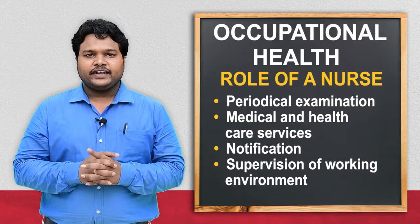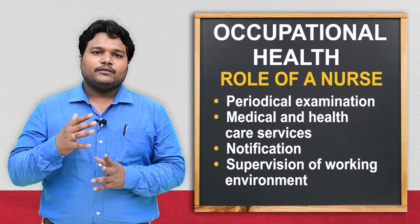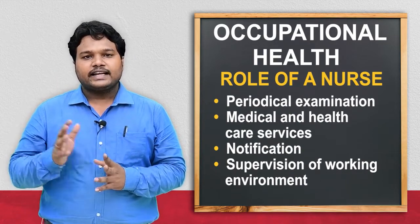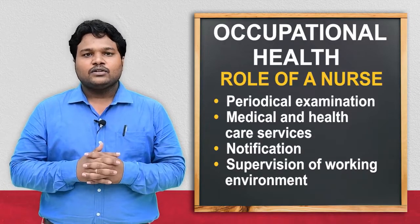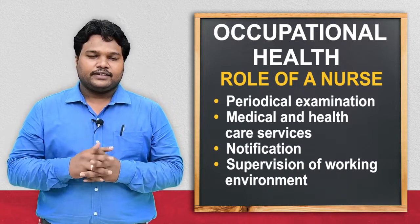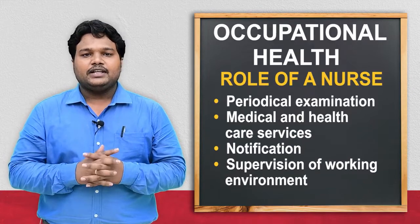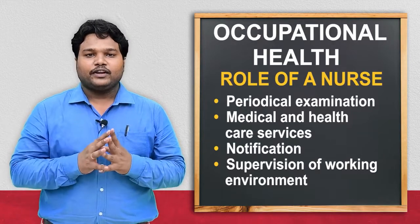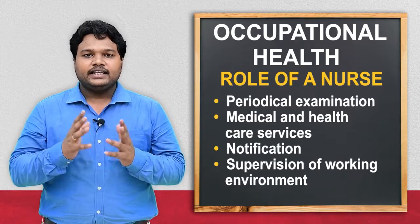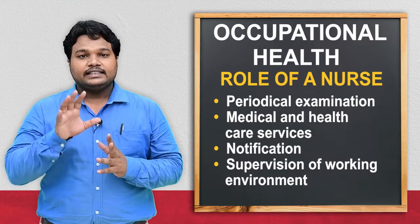The next role is notification. Notification is very important because in an industry, a worker is not working alone — they work with other people. Another person may have a disease and it may lead to transmission, person to person. A communicable disease may develop in the industry. For example, Salmonella Typhi leads to Typhoid. If one employee is identified with Salmonella Typhi, there is a risk of transmission to all employees. We have to notify that the person is suffering with Typhoid and advise all employees to boil their water to control the disease.